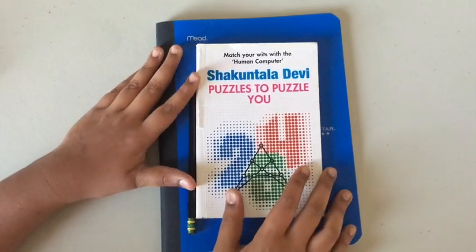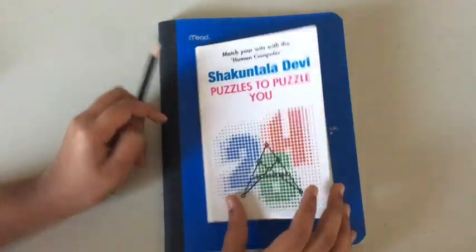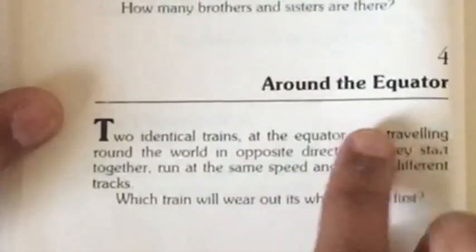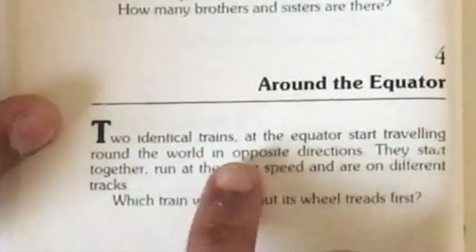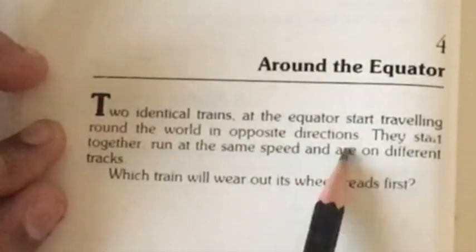Hello guys and welcome back to another video on Shakuntala Devi puzzles to puzzle you. Today we're gonna be looking at problem 4, around the equator. Two identical trains at the equator start traveling around the world in opposite directions.